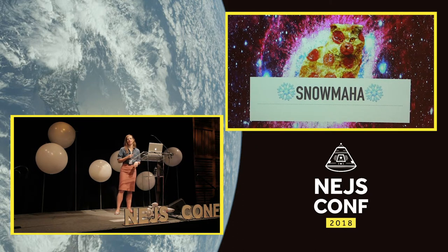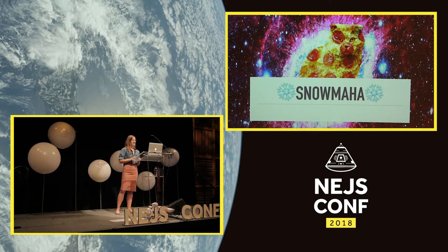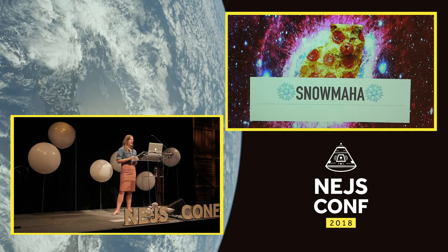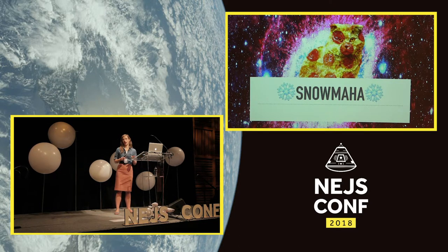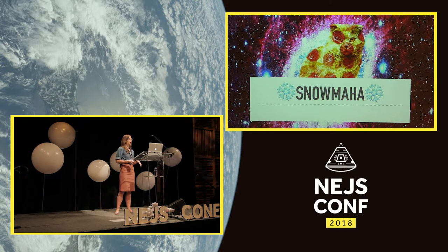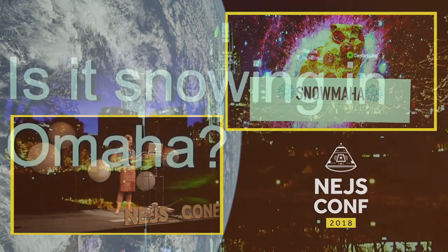I'm going to show you with a real-life example: Snowmaha. Snowmaha is a site I built earlier this year. It is a simple single-page website that indicates whether or not it's snowing in Omaha right now. It makes a single HTTP request to a weather API called DarkSky using Node. The page loads immediately while waiting for the response, and then once the response is received, JavaScript logic on the front end displays snow if it's snowing. Here's what it looks like.